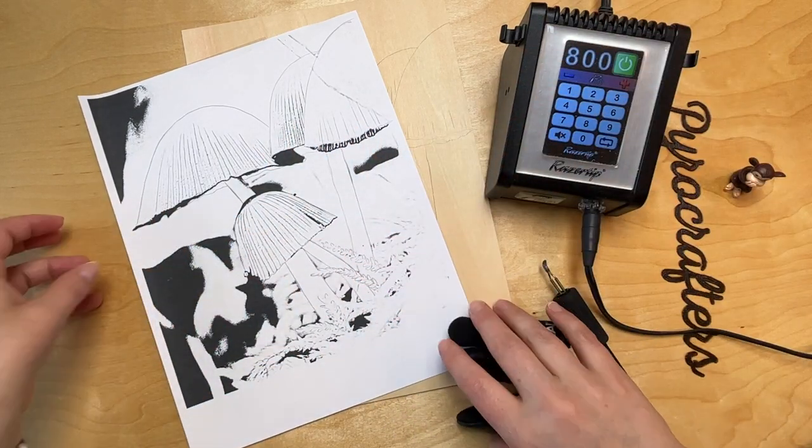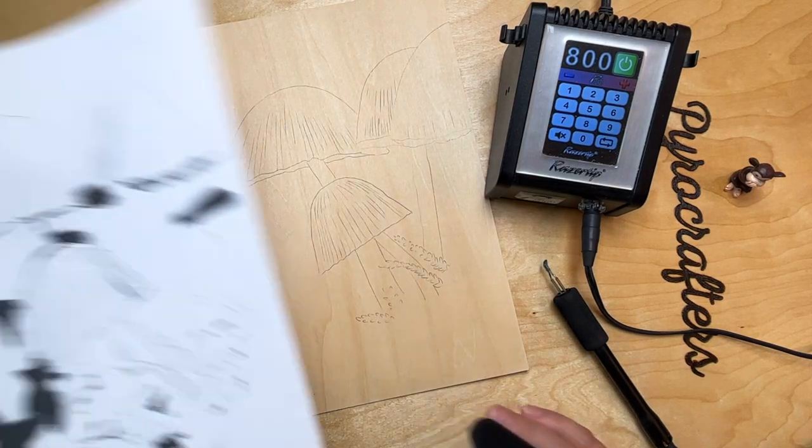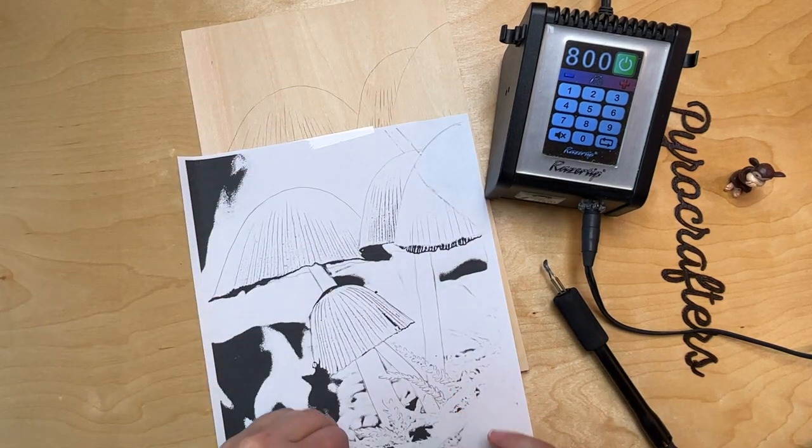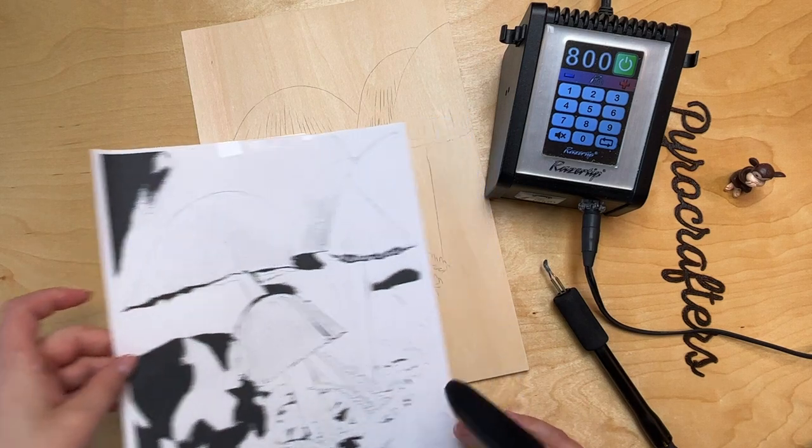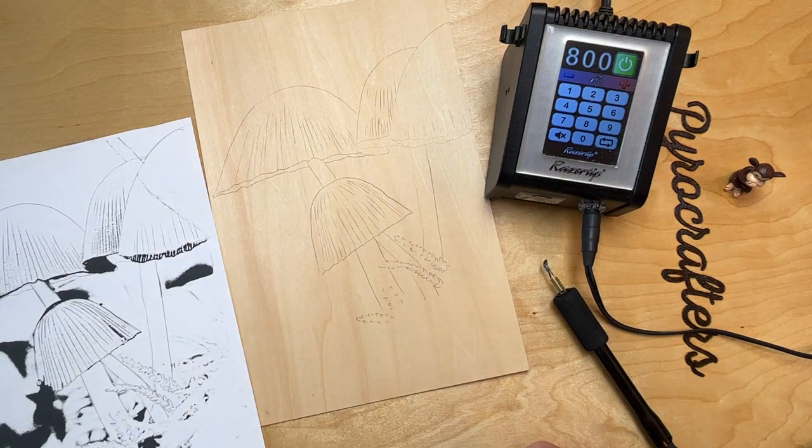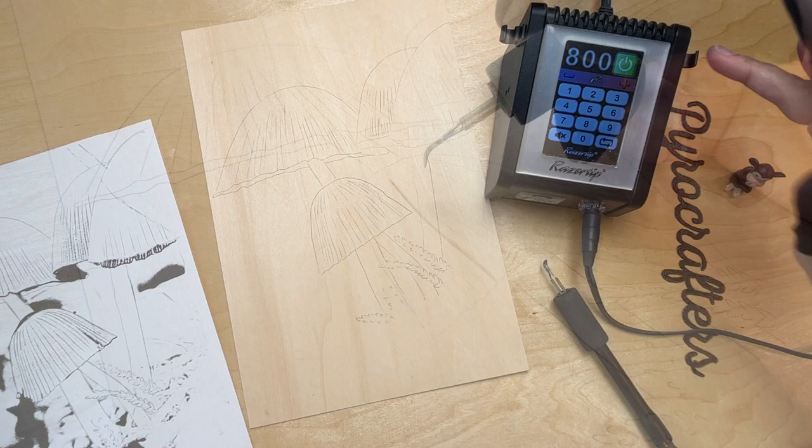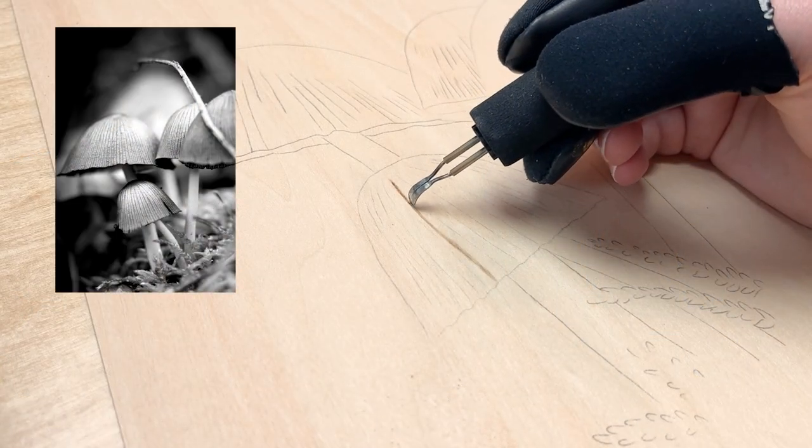I popped it into Photoshop and edited it so I could get it down to shadows and shapes, then traced the outlines here. The lines on these mushrooms are super delicate and thin, so I'm going to keep my heat low and go really slow so I don't over-burn or over-scorch anything.